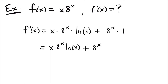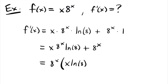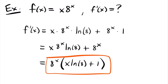Notice that both of these terms have a common factor of 8 to the power of x, so we can pull that out. We'll have that this is equal to 8 to the power of x times the quantity x times the natural log of 8 plus 1. And so this is the derivative of this function.